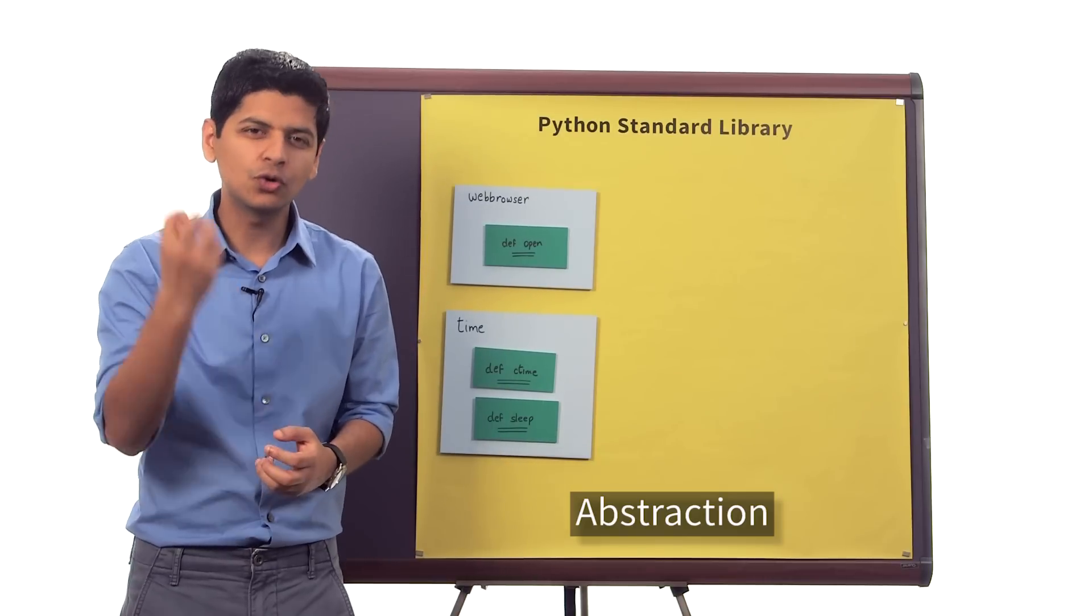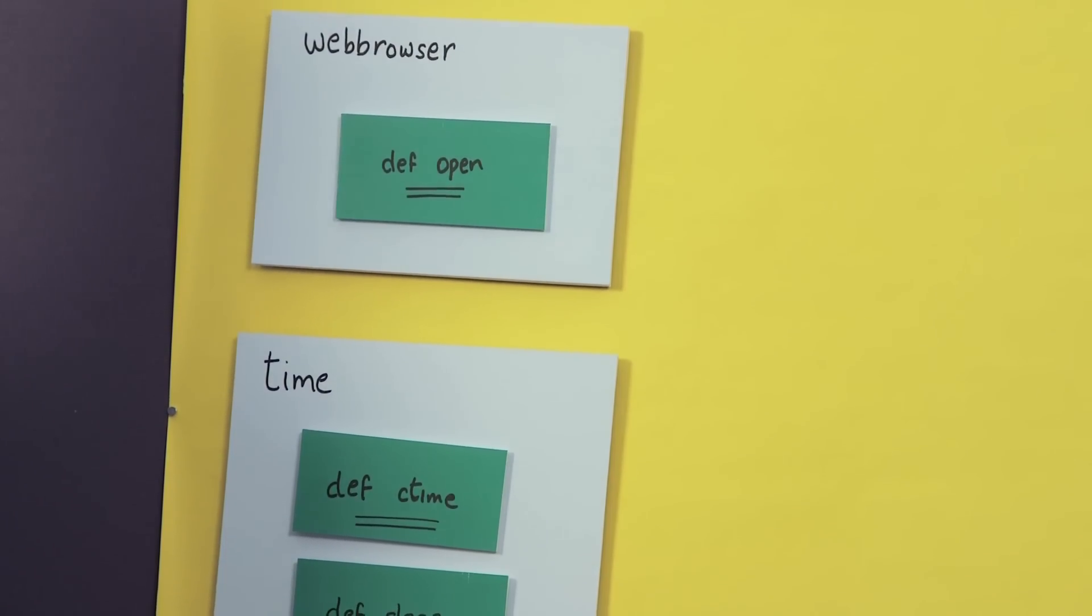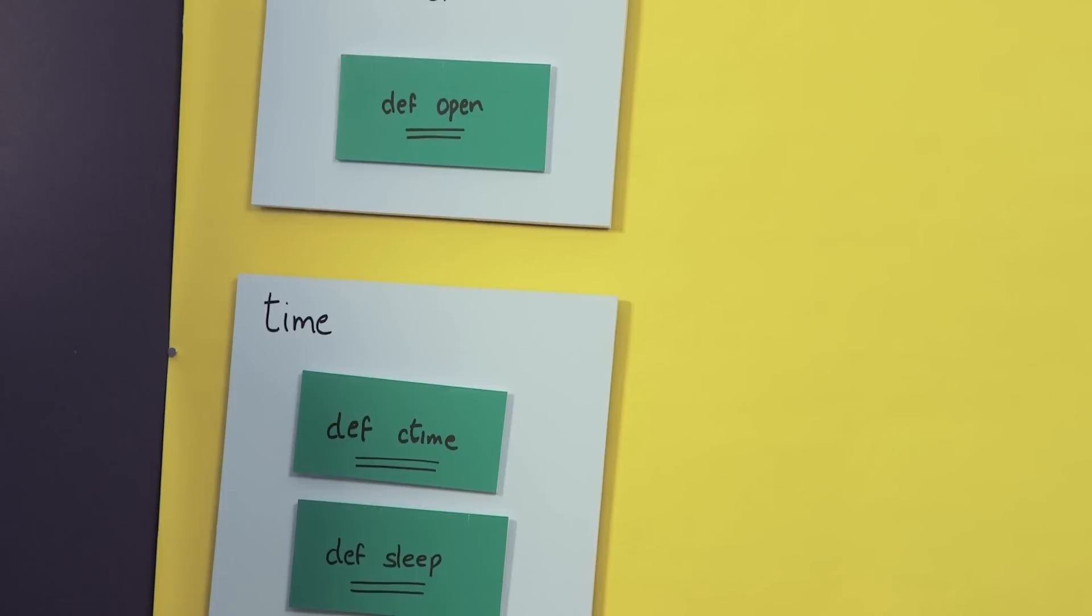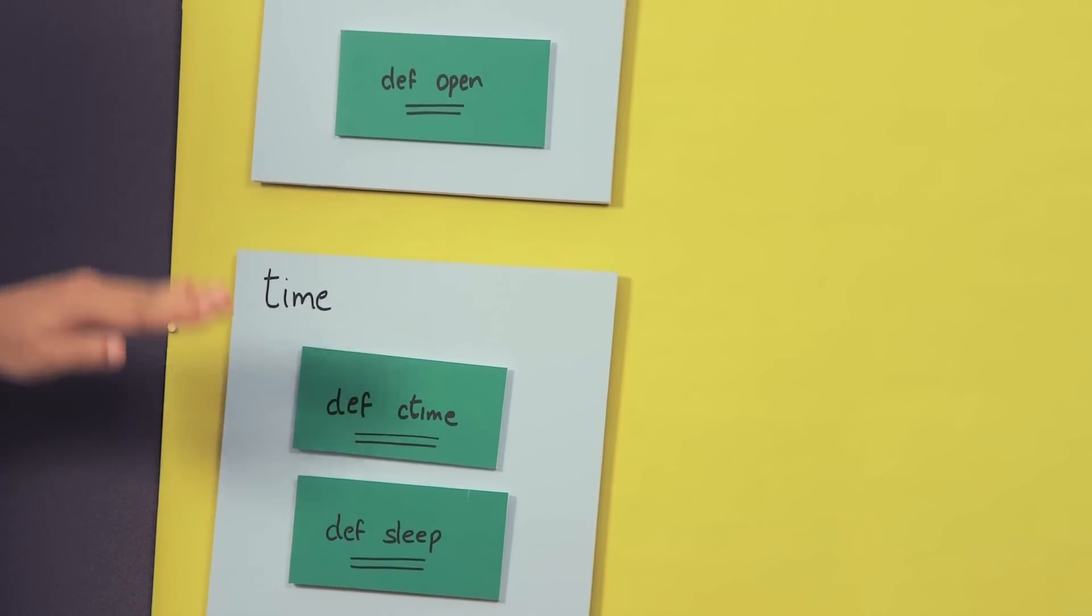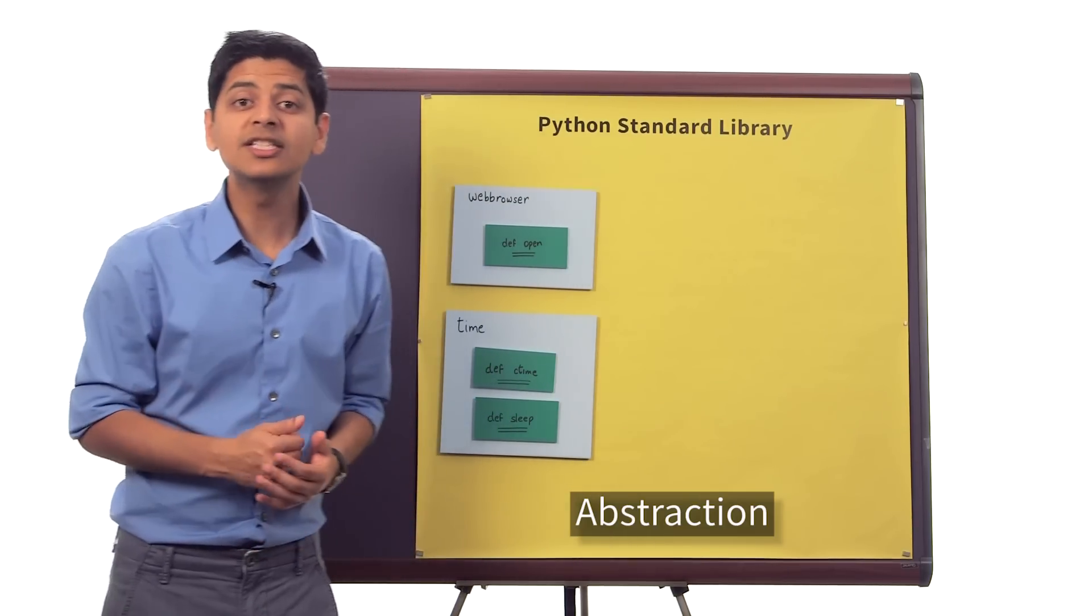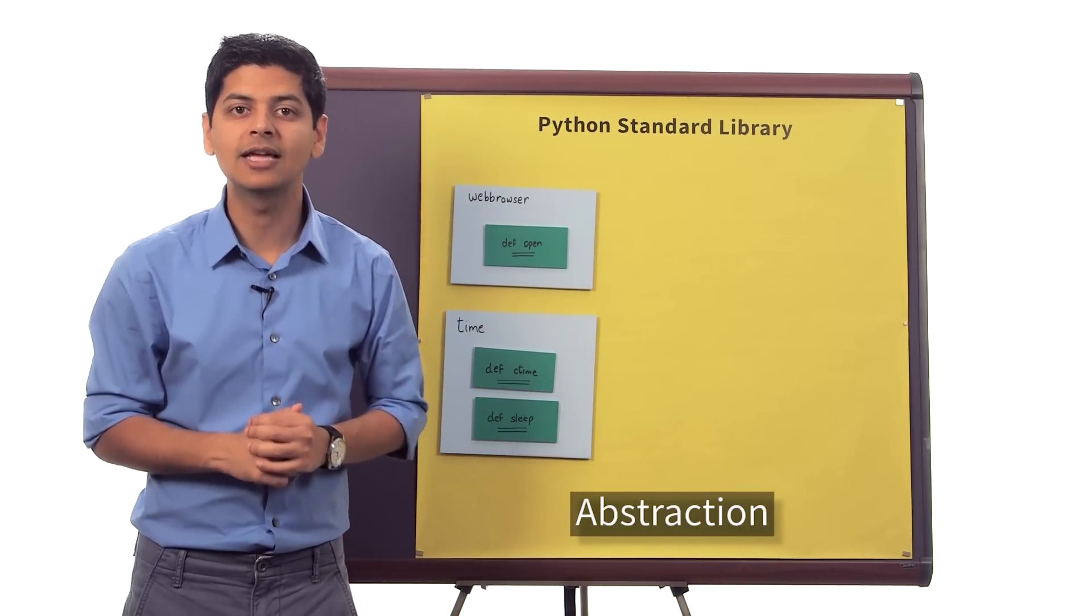Now this idea of abstraction is a really powerful one in programming, because it allows us to focus on the program that we actually want to write, which is the take a break program. And it empowers us to use these functions simply by reading their documentation. So let's read some documentation now and see if these functions actually exist in the Python standard library.